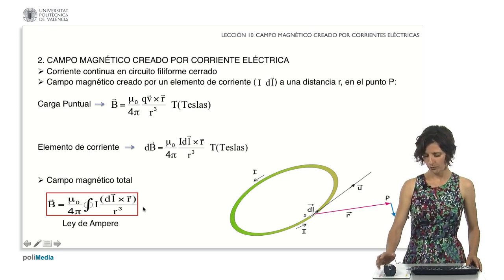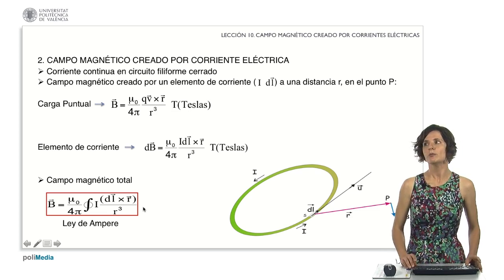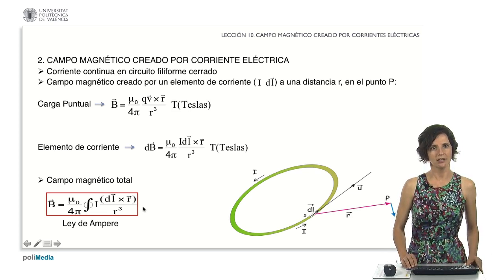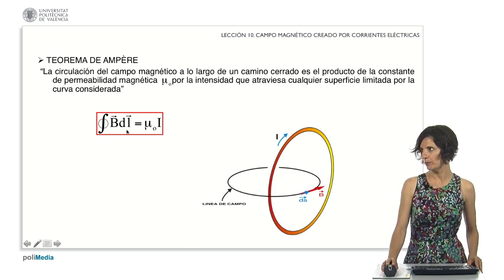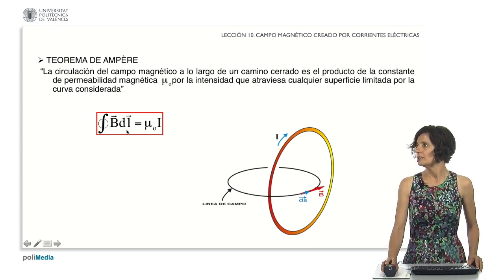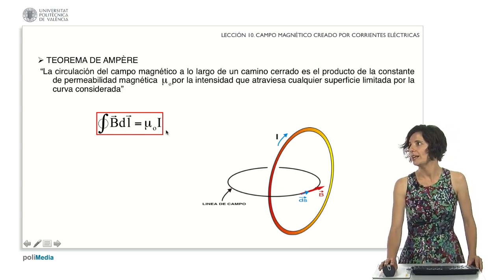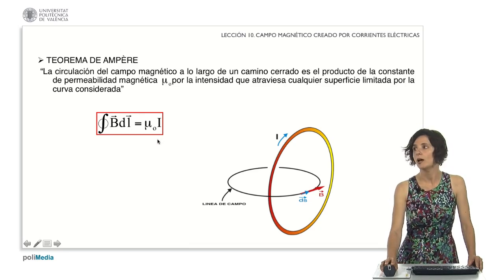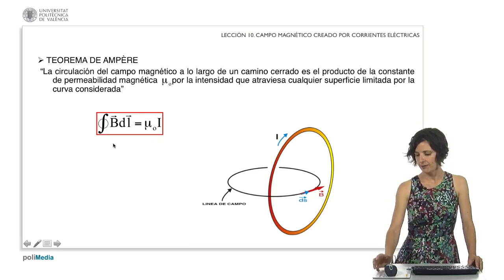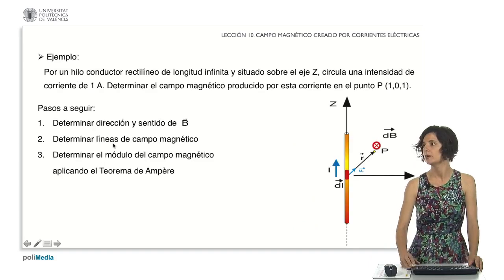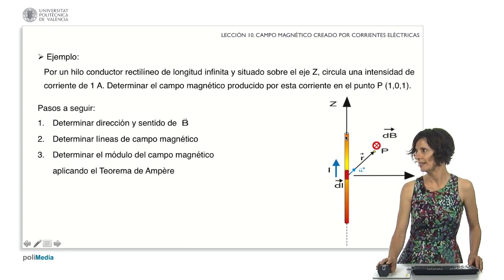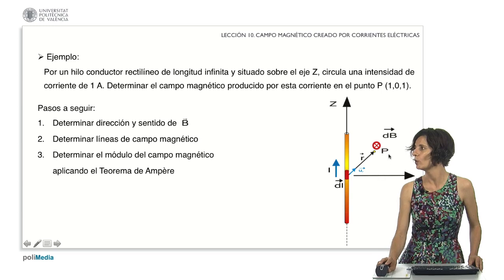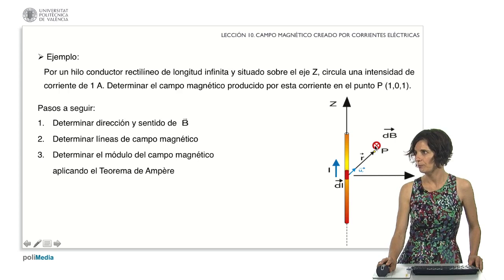However, calculating the magnetic field of filiform circuits doesn't always require integration. It is possible to apply Ampere's theorem, which tells us that the circulation of the magnetic field along a closed path is equal to mu sub-zero multiplied by the current passing through any surface bounded by the given curve. Let's see an example: an infinitely long straight conducting wire situated along the z-axis with a current of 1 Ampere. We will compute the magnetic field at point P with coordinates x and z equal to 1.